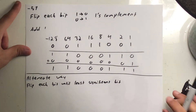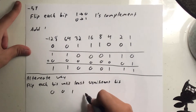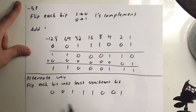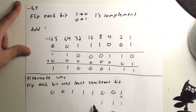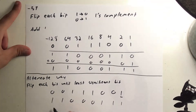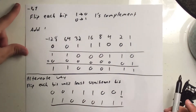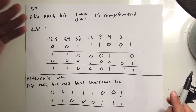For positive 57, the bit pattern is: 0, 0, 1, 1, 1, 0, 0, 1. The least significant bit is the rightmost 1. You keep that one and flip everything else. This becomes: 1, 1, 0, 0, 0, 1, 1 — and that's the same exact result as the previous method. It doesn't matter which way you do it, you get the same answer.